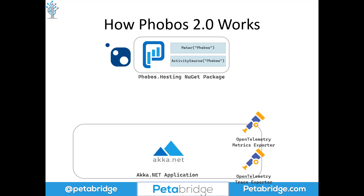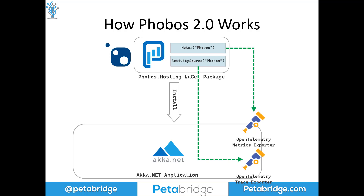So how does Phobos 2.0 work? Provided that you're using OpenTelemetry — which you should be, as it's the new future of observability for all .NET applications — all you have to do after you buy a license is: you'll be given access to a private NuGet feed, you install the Phobos.Hosting NuGet package, you make one extension method call to register Phobos inside your actor system, and then you register the Phobos meter and activity source to your OpenTelemetry metrics and tracing pipelines. This causes traces produced by Phobos to automatically be exported along with other traces from ASP.NET, GRPC, and the other parts of your .NET application — and the same happens for your metrics.